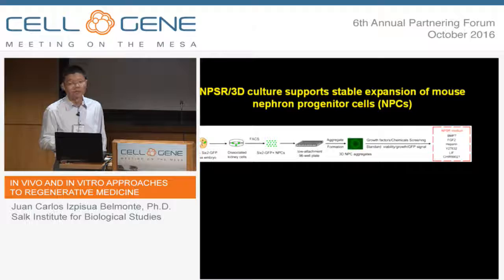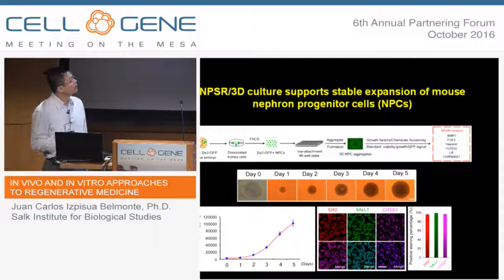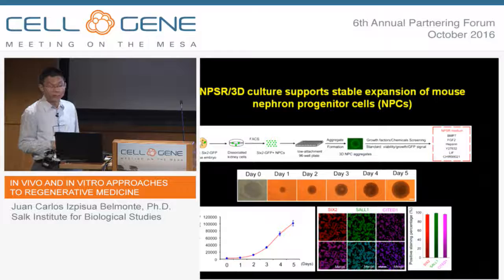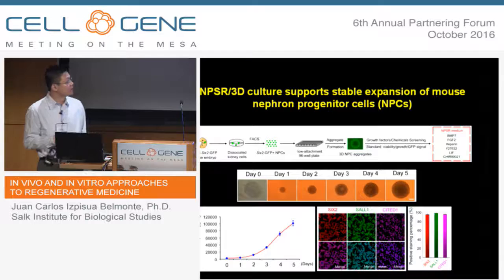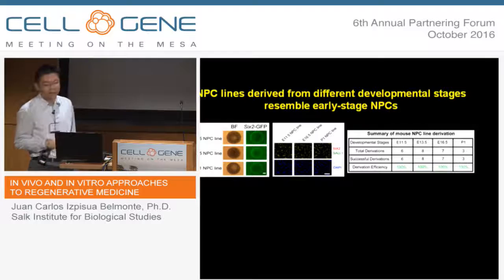Through several rounds of screening and optimization, I finally obtained a good MPSR media — meaning nephron progenitor self-renewal media. Under this MPSR 3D culture condition, the NPCs can grow very happily and very stably. Starting from 3,000 cells per aggregate, they can grow to 100,000 cells per aggregate within four to five days. If we look at the gene expression of these cells, we can see that they express very homogeneously the MPC marker genes, including 6-2, SAR-1, and Cited1. Using this MPSR 3D culture condition, we can also derive MPC lines from other developmental stages with 100% success rates.